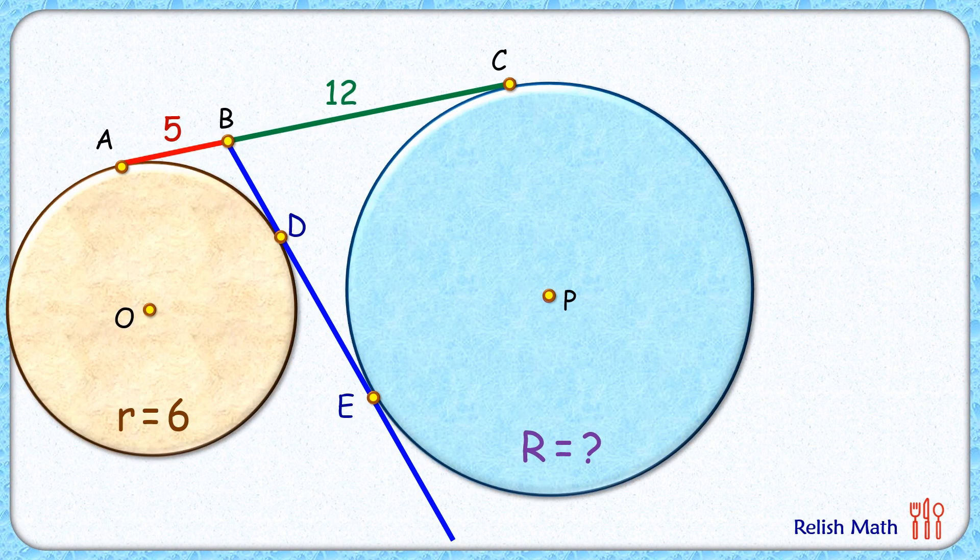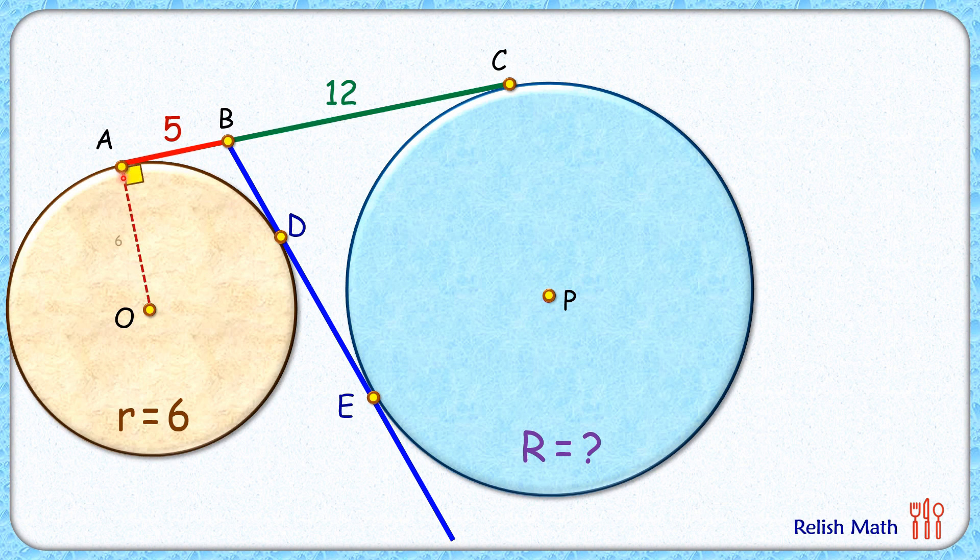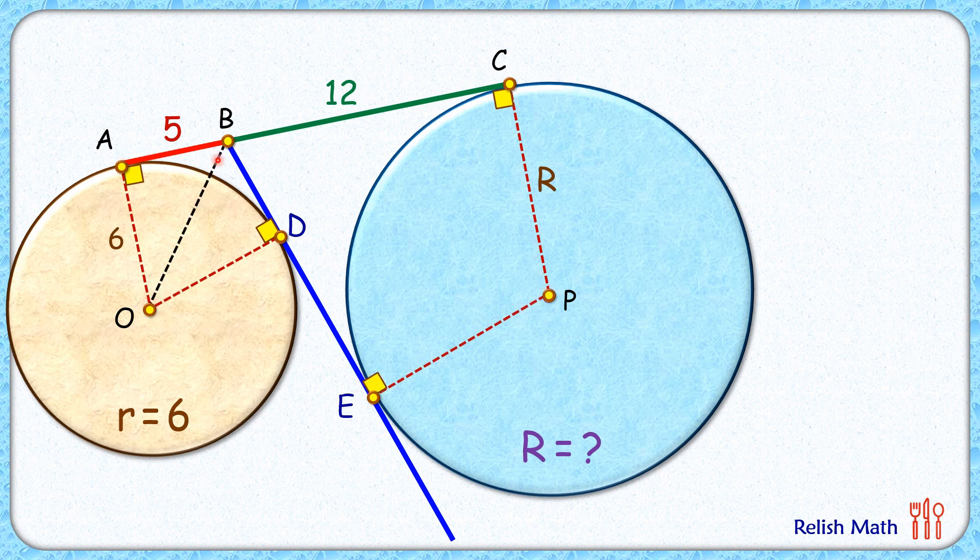Let's check the solution. When tangents are given, we have to draw radius which is perpendicular to tangent. So OA is 6 centimeter. Let's join OD. The same way in the second triangle, let's join PC which is R centimeter, and PE. Now let's join OB in this.